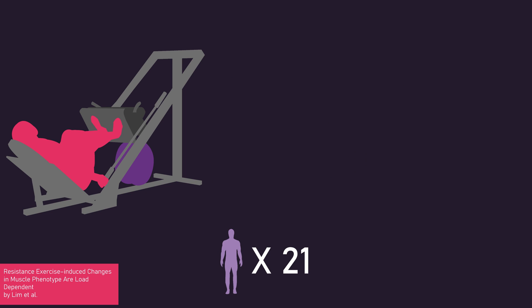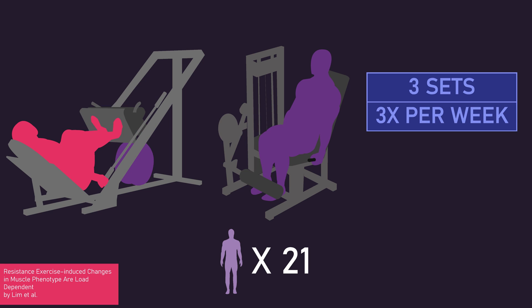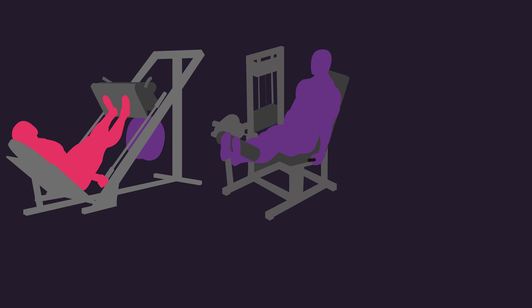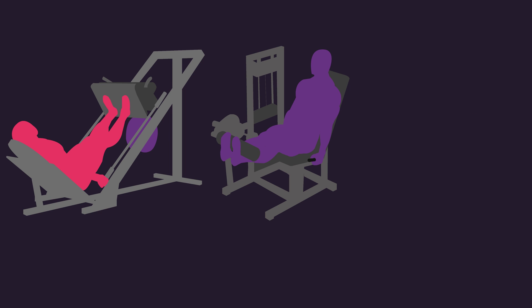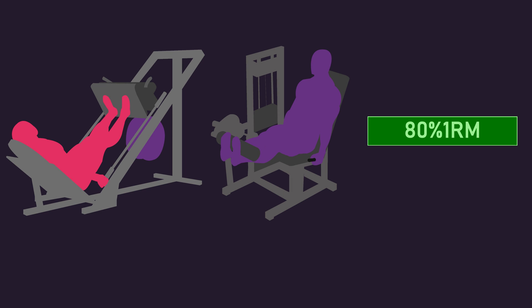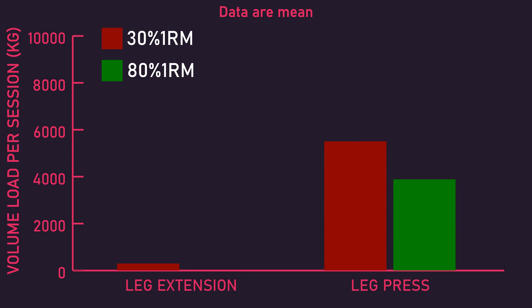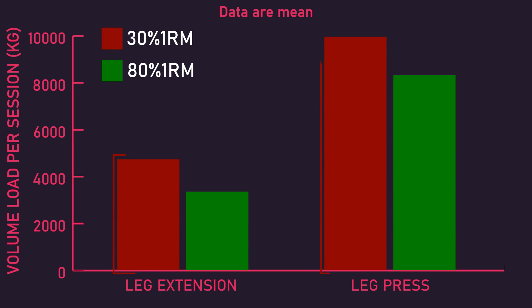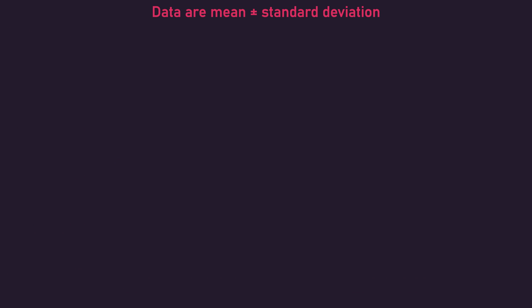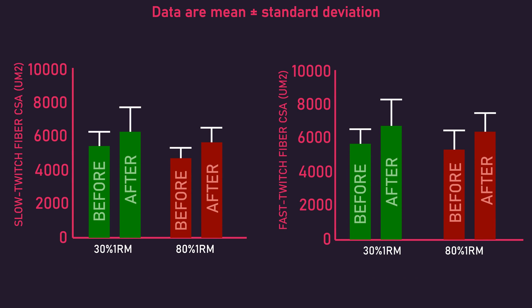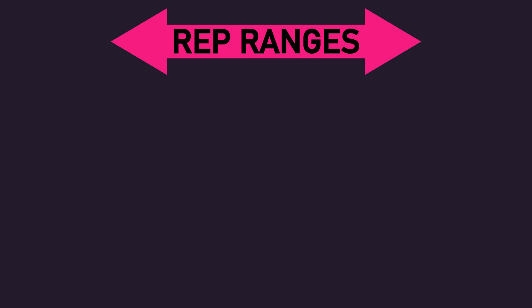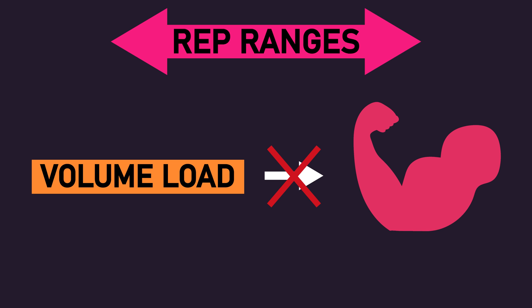For instance, Lim and colleagues had 21 previously untrained men train the leg press and leg extension each for 3 sets, 3 times per week for 10 weeks. One group performed repetitions to failure each set with a 30% 1RM load, while another group performed repetitions to failure each set with an 80% 1RM load. The average volume load used for both exercises was greater for the subjects that trained with a 30% 1RM load. However, growth of slow-twitch and fast-twitch fibers from the vastus lateralis muscle was similar between training with a 30% and 80% 1RM load. Therefore, the rep range research demonstrates that higher volume loads do not necessarily produce more muscle hypertrophy.